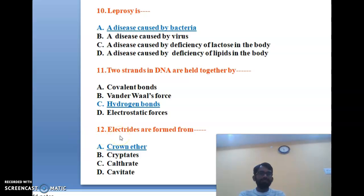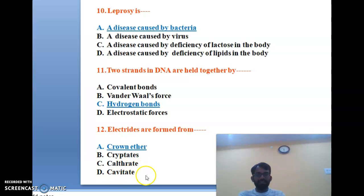The twelfth question: electrides are formed from crown ether, cryptate, clathrate, or cavitate? Crown ether is the correct option for the twelfth question. The correct answer is A, crown ether.